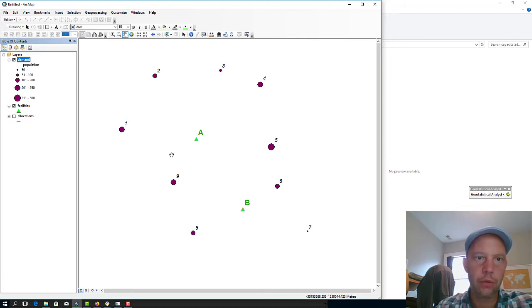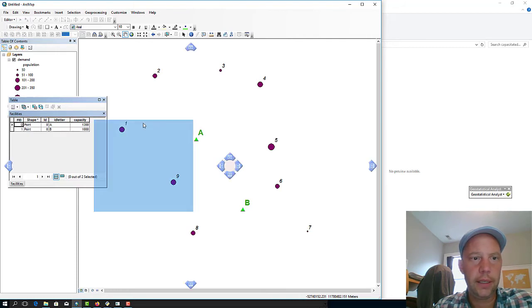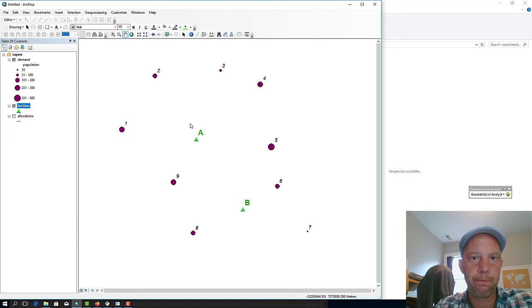So in order to compute this capacitated p-median, first step here is to write a Python code that would read the demand node, that would read the facilities and additional information on capacity and so on. And then essentially generate a capacitated p-median problem that can be solved within CPLEX. The last thing I want to point out before opening this Python code here is that the facilities also have a capacity, upper capacity.